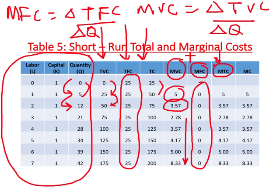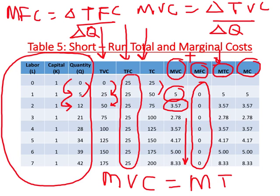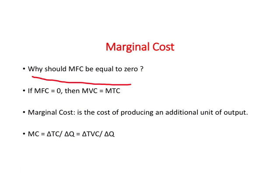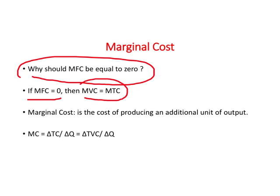On this table you realize there is no concept called MFC, because when we say something is fixed it cannot change, and MFC is trying to look at change in fixed cost — which can never occur. So if you look at any textbook, no textbook distinguishes between MVC, MFC, and MTC. They use simply the concept of marginal cost, because MVC and MTC are one and the same thing — since MFC does not exist, MFC equals zero, which means MVC equals MTC.